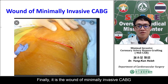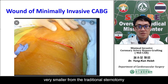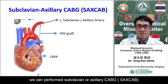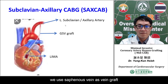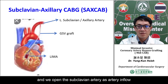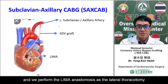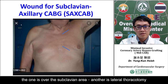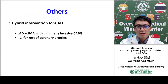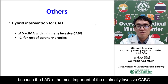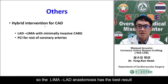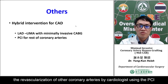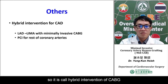The wound of the minimal invasive CABG is much smaller than the traditional sternotomy. In some cases where the LIMA cannot be used, we can perform subclavian or axillary CABG — what we call SAX CABG — using the saphenous vein as a vein graft, opening the left subclavian artery as arterial inflow, and performing the LIMA anastomosis via lateral thoracotomy. The wound of SAX CABG consists of two incisions: one over the subclavian area and one for the lateral thoracotomy. In other cases, since the LIMA to LAD anastomosis has the best result, we can perform LIMA to LAD in minimal invasive CABG and revascularize other target coronary arteries by cardiologists using PCI. This is called hybrid intervention for CABG.